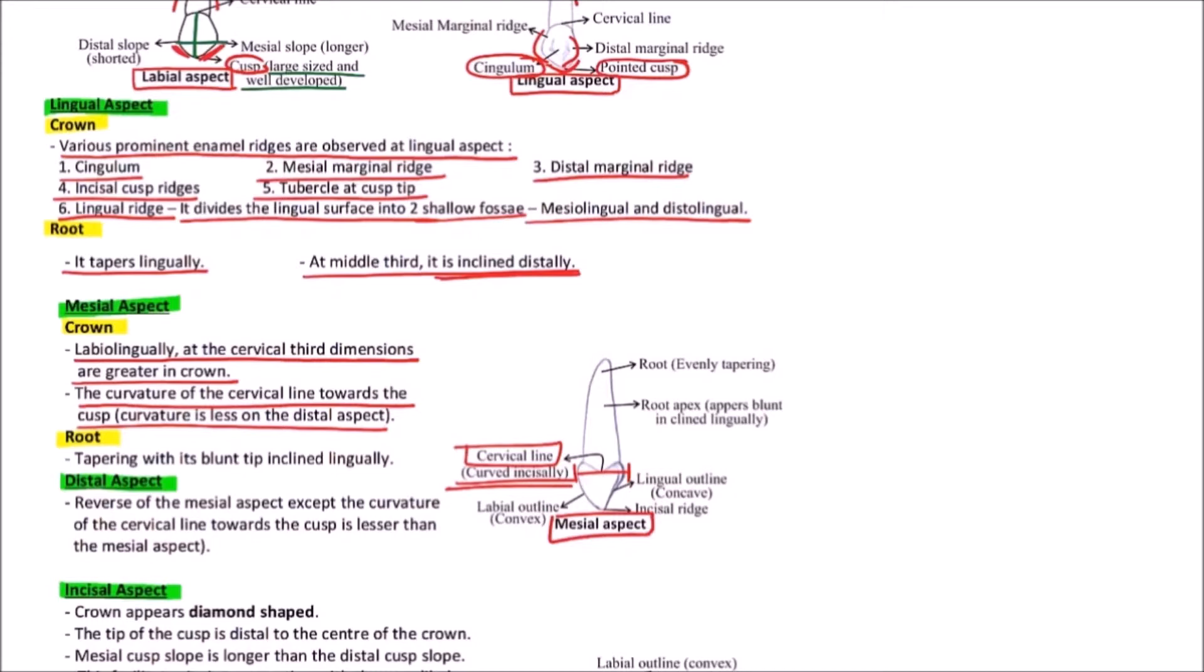The curvature is less on distal aspect. The root is tapering with its blunt tip inclined lingually. We can observe that this blunt tip is inclined lingually, evenly tapering.